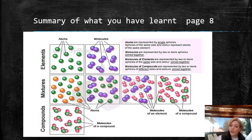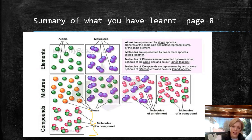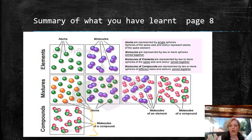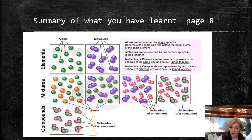These are called particle diagrams — we show how the particles are arranged, whether they are atoms or molecules. Molecules are represented by two or more spheres or circles. Molecules of elements are represented by two or more spheres of the same size and color — so if it's the same size and same color, chances are that's an element. Molecules of compounds are represented by two or more spheres of different sizes. Water is always represented as the Mickey Mouse shape because the hydrogen atom is a lot smaller than the oxygen atom, and due to how hydrogen and oxygen bond together, they form that Mickey Mouse arrangement. Each Mickey Mouse is one molecule of a compound.